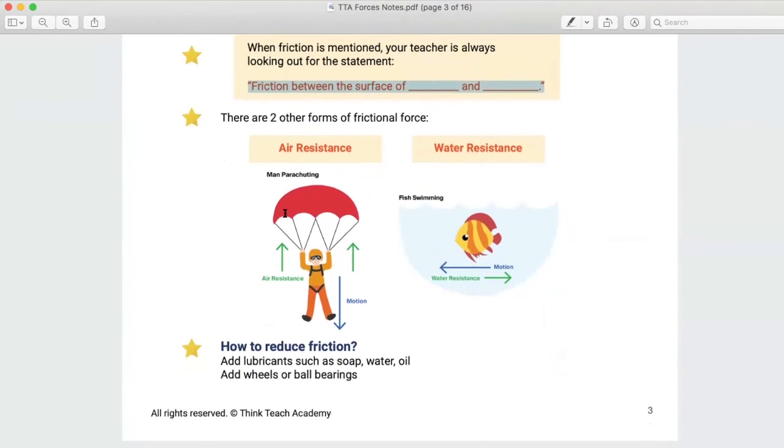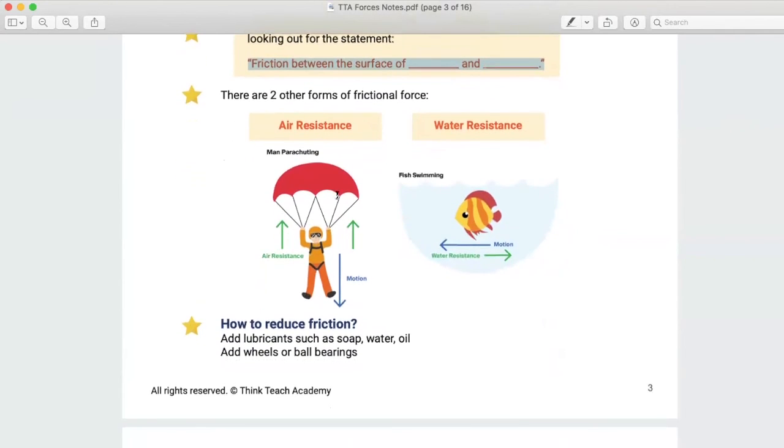Okay, so there are two other forms of frictional force, right? So, you've got air resistance. So, always remember parachute, right? So, the only reason why the parachute doesn't allow you to free fall onto the ground is because of air resistance, right? And then for fish, swimming is because of their streamlined body shape, you'll reduce their water resistance so that you can swim well.